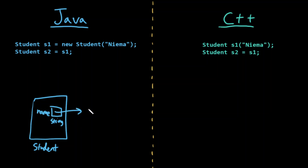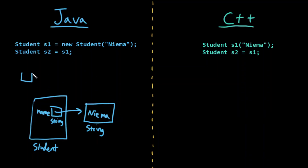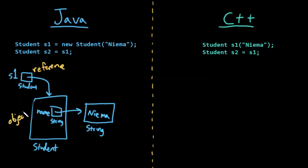This name is actually a reference to some string object representing the name Nima. And then I have a reference called S1 — a reference of type student referring to this student object. So S1 is a reference, and the student object it points to is the actual object.